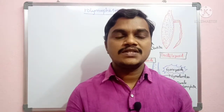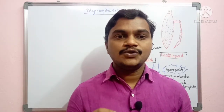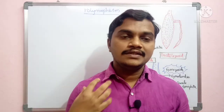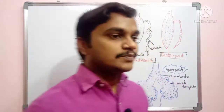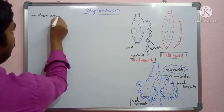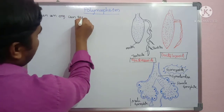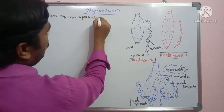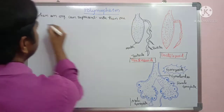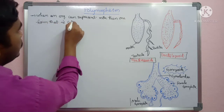Polymorphism is a phenomenon when an organism represents more than one form and they have different functions. That is called polymorphism — when an organism can represent more than one form, they have more than one form, that is called polymorphism.